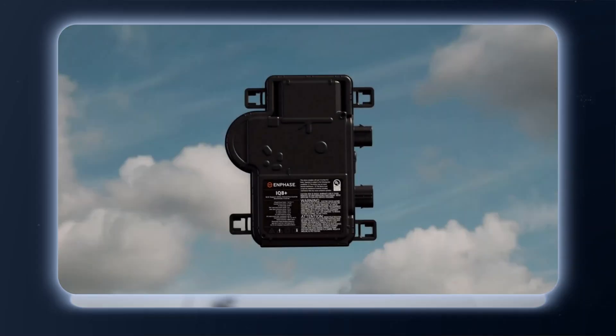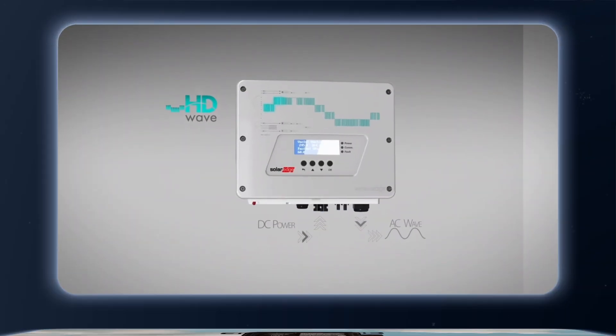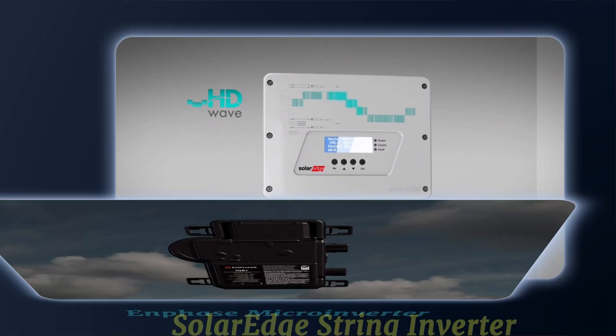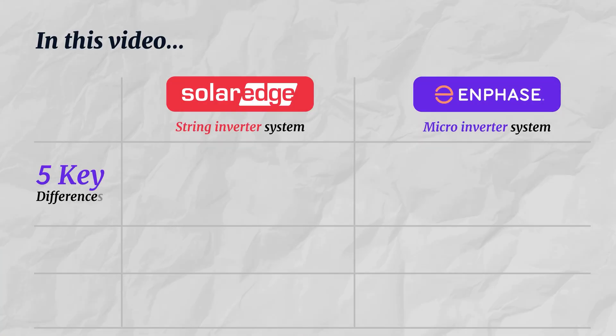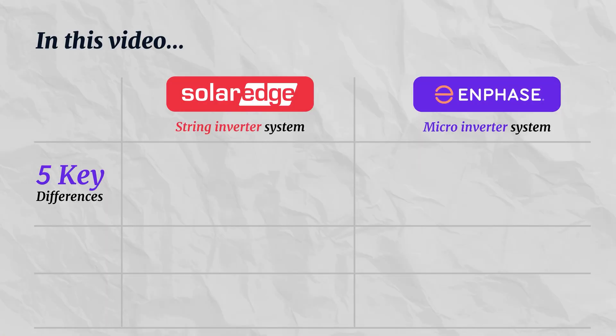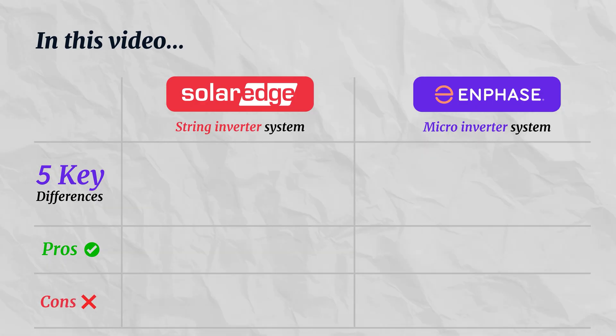Choosing between the Enphase Micro Inverter System and the SolarEdge String Inverter System is one of the biggest decisions that first-time solar homeowners face, and depending upon who you ask, can be rather controversial. So which is the better solution? In this video, I'll break down the 5 key differences between these two systems, along with their pros and cons to help you determine which may be a better fit for your project.